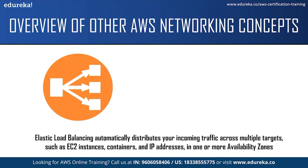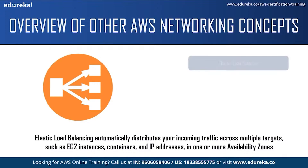Elastic Load Balancing scales your load balancer as your incoming traffic changes over time. You can add and remove compute resources from your load balancer as your needs change without disturbing the overall flow of requests to your application. Elastic Load Balancing offers four types of load balancers. First is the classic load balancer, which provides basic load balancing across multiple Amazon EC2 instances and operates at both the request level and the connection level. A classic load balancer is intended for applications built within the EC2-Classic network.